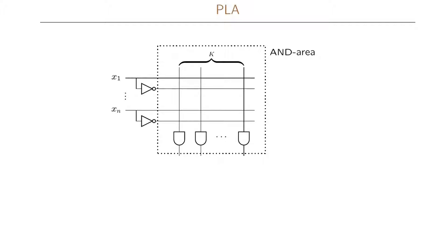The AND area takes N inputs — X1 to XN — and uses both the input in its normal form X1, but also the complement of each input. So there will actually be 2N input lines to our AND area. The AND area consists of K AND gates, and each AND gate can take as input one of the 2N inputs. We can mark connections with a dot to indicate, for example, that X1 and XN' are inputs to the second AND gate.